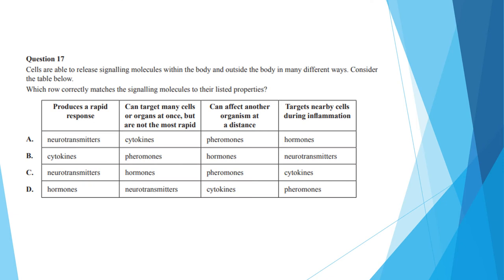Question 17 has a table of four different signaling molecules and asks you which row correctly matches the signaling molecule to their listed properties. This can be quite confusing to look at a table and pick a correct row. The strategy here is to be systematic and circle statements that you know are correct and cross out things that are wrong. The first thing that grabs my eye is in that second column where they talk about signaling molecules that target many cells and organs but are slow, which in this case is hormones. And this leads me to option C. And again, this is a very well answered question.